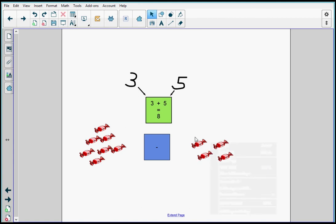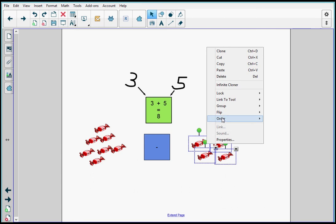And then on this side do the same with this set of four candies. Select them all and then group.